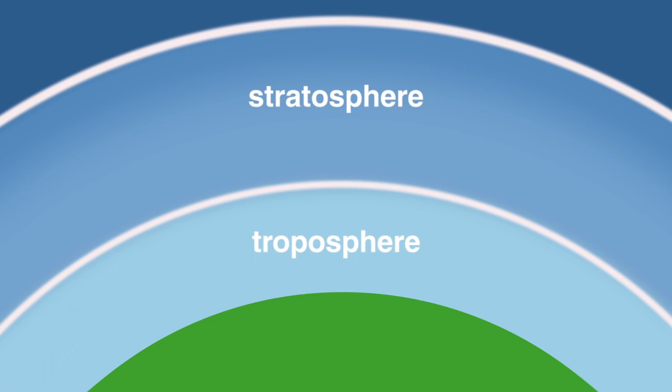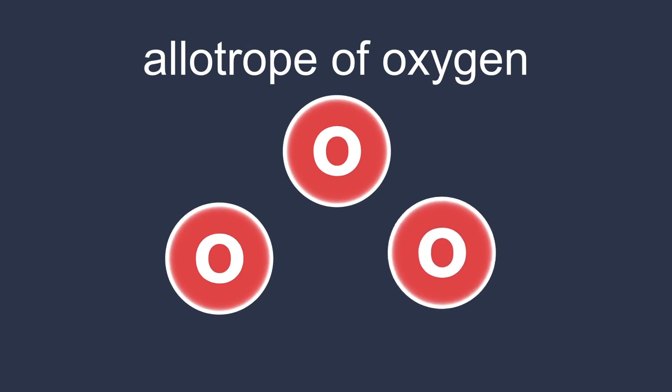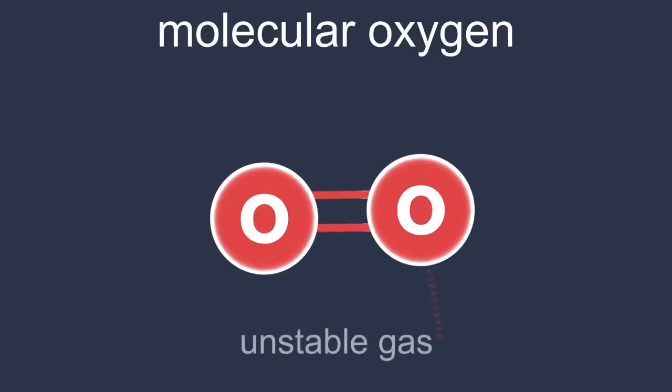So where does this good stratospheric ozone come from? Pause the video and think of the formula of ozone. Well, ozone is an allotrope of oxygen. Its molecules are made of three oxygen atoms bonded weakly together. It is an unstable gas which slowly decomposes back to molecular oxygen.